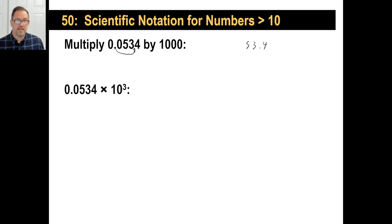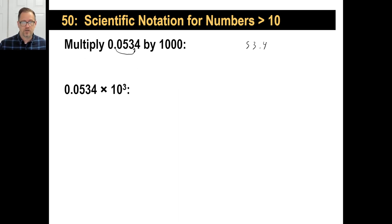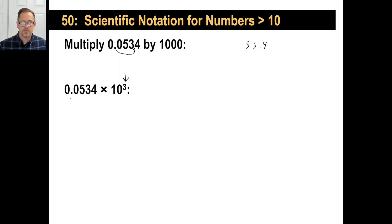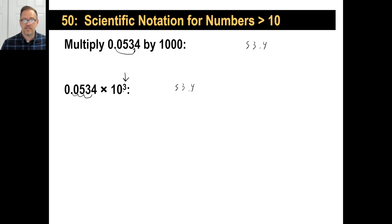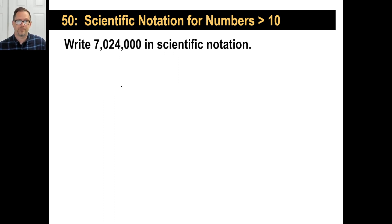That is almost in scientific notation right here. The same problem, but instead of writing 1,000, you're going to write 10 to the third power, which is 1,000 — 10 times 10 times 10. So if you multiply by 10 to the third power, that 3 is telling you to move that decimal point over 1, 2, 3 times. The answer is also 53.4. We'll get into ones where they do 10 to the negative 3 and 10 to the negative 10 — we'll save that for just a little while.